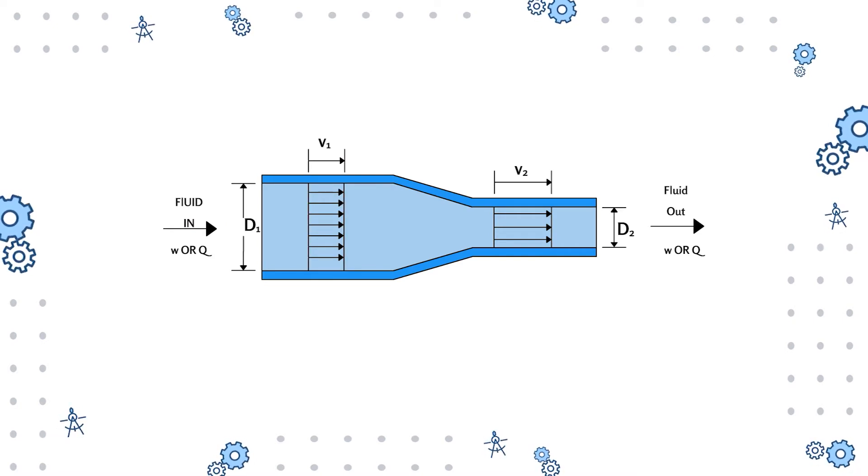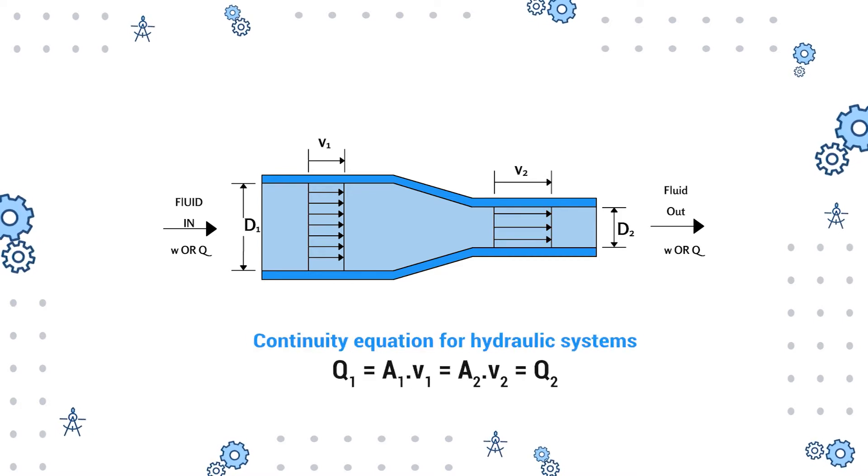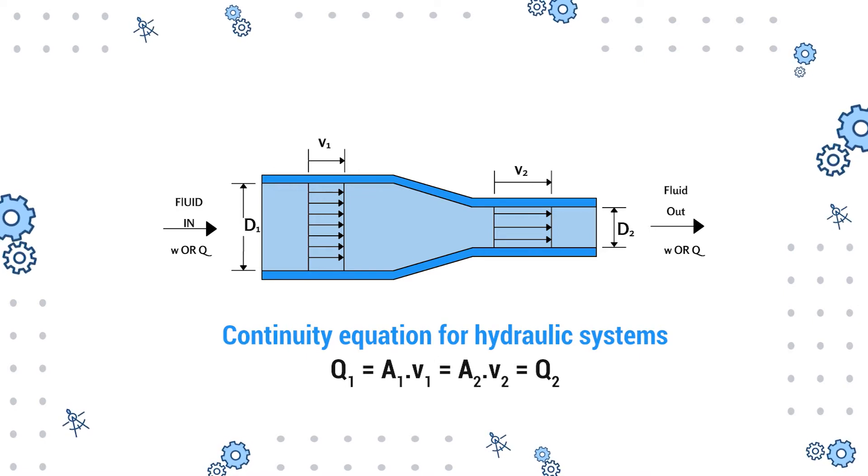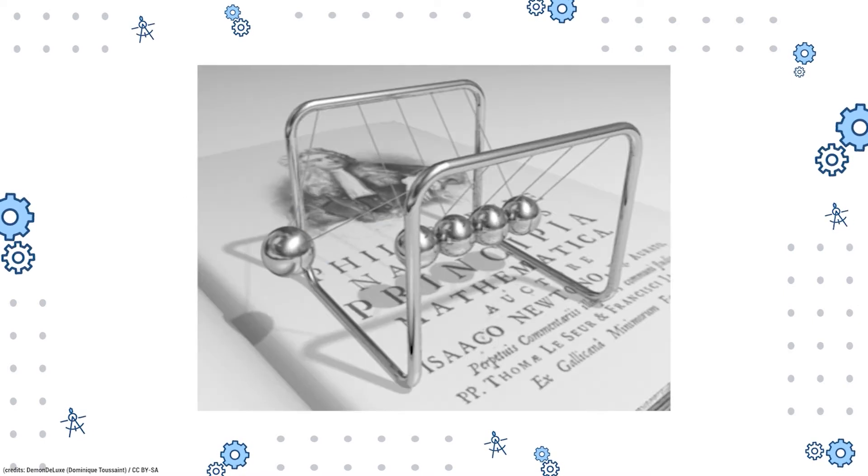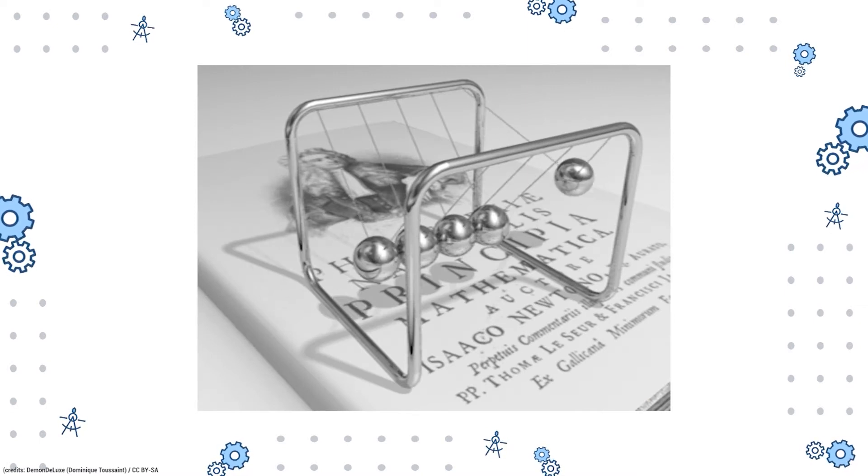When a fluid flows through the larger area the velocity is reduced. On the other hand, when the fluid flows through a smaller area then the velocity increases to maintain the continuity of the flow. Hence, according to the continuity equation, the volume flow rate is always constant for a hydraulic system.